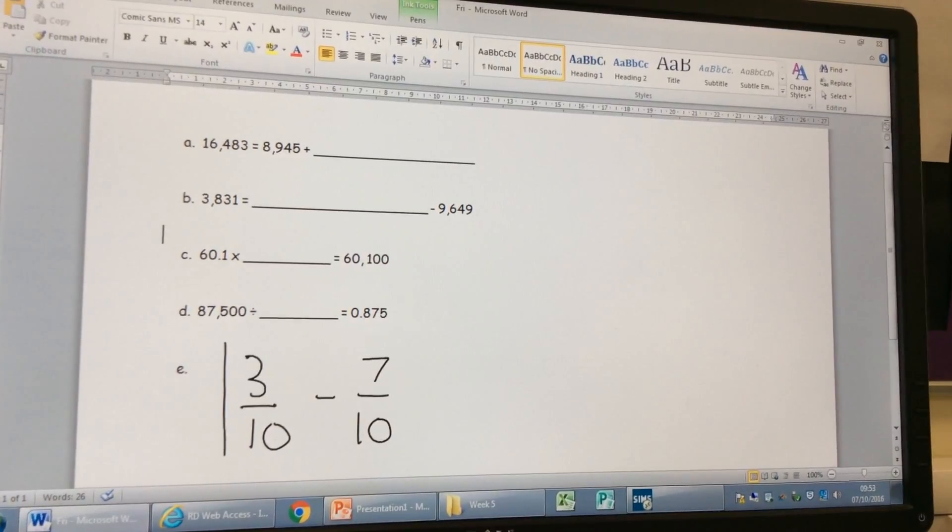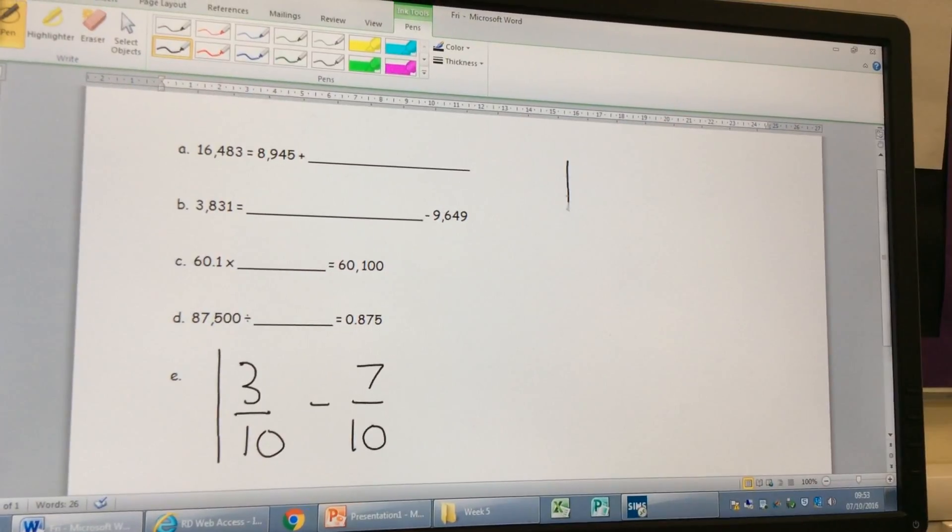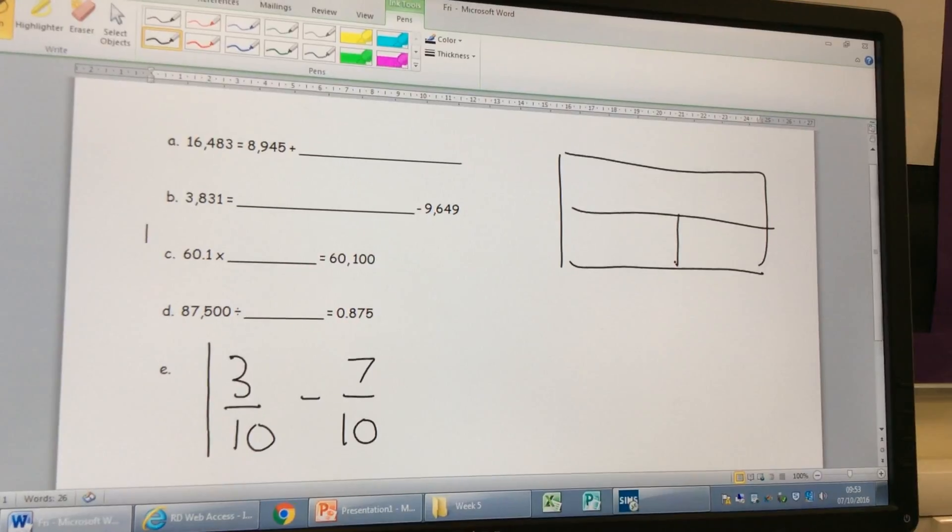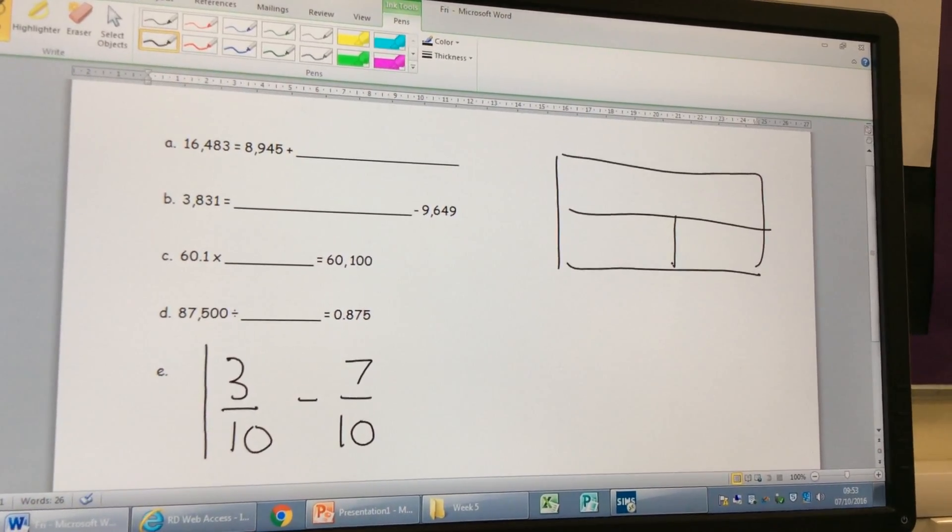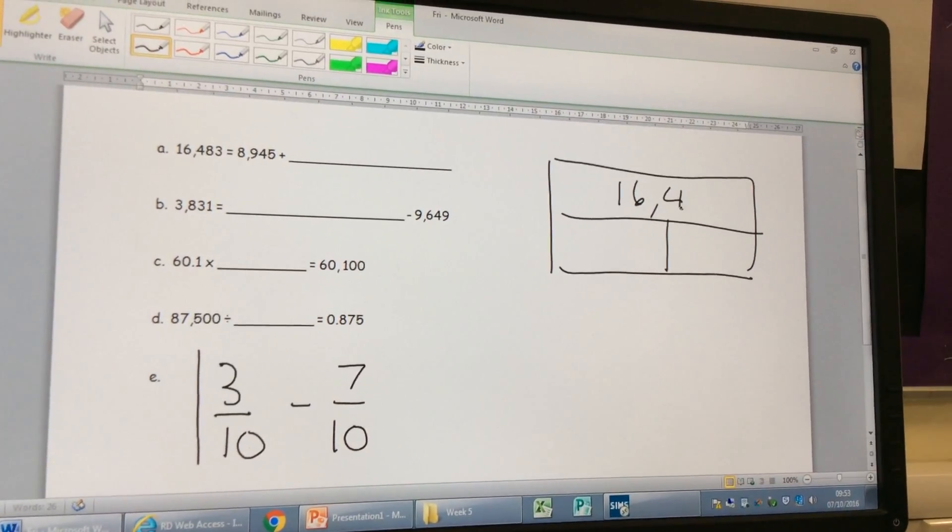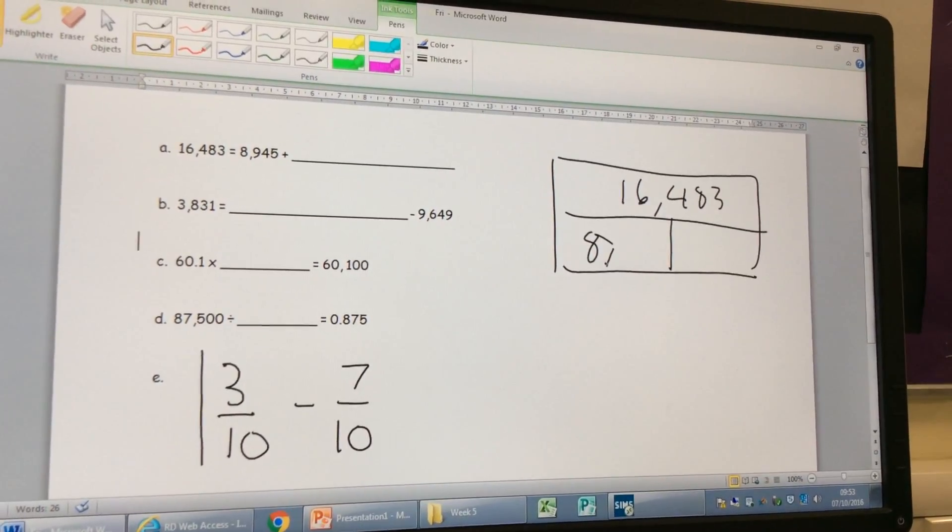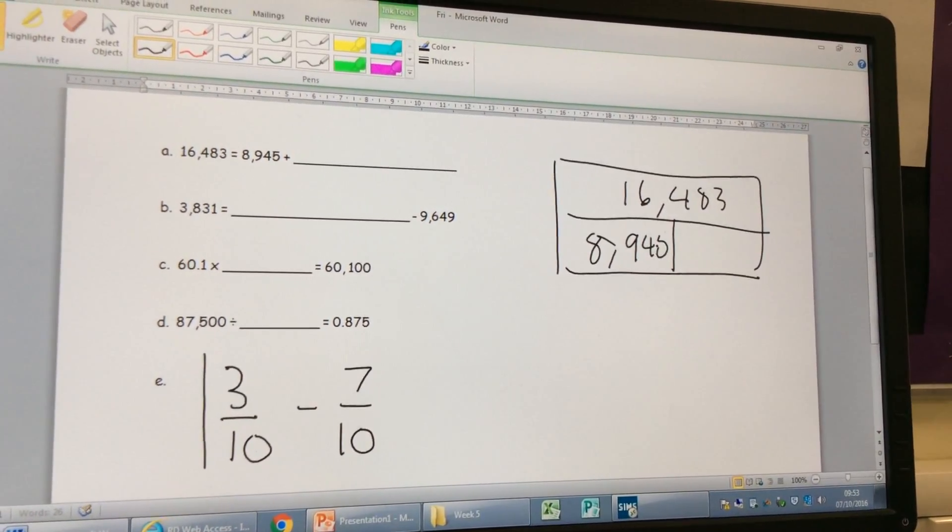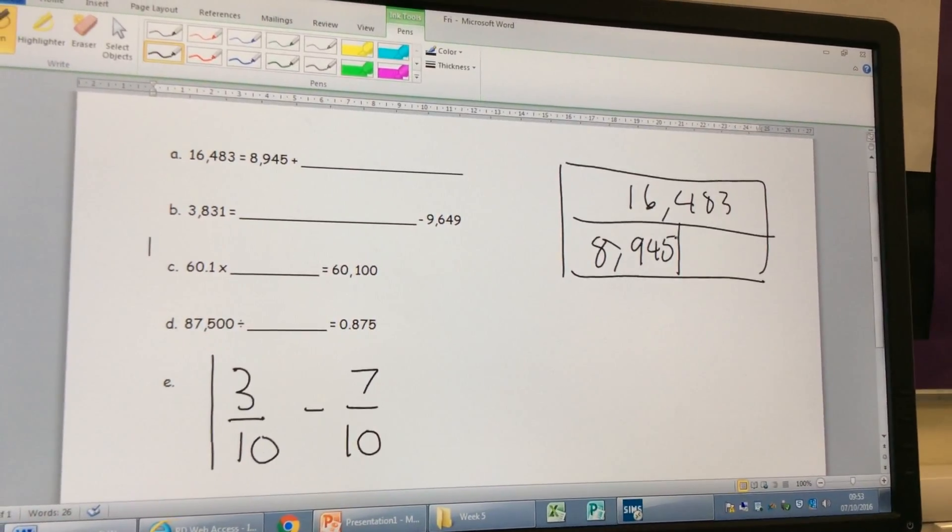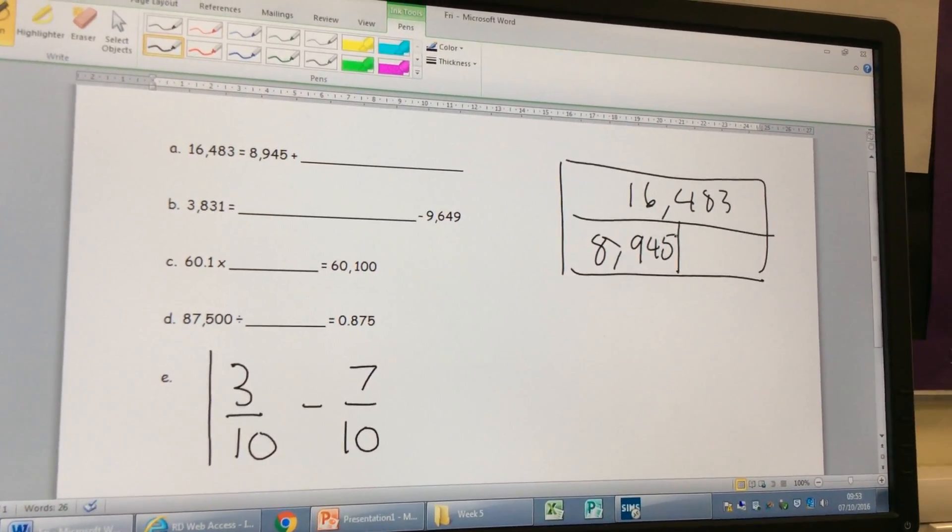Excellent, yes, because when we do an addition the whole is always going to be the answer. So let me just draw a quick bar model to show you what Ryan's just said there. Because we know that in addition calculation two parts are going to make a whole, we put our 16,483 there, our 8,945 there. And we know, looking at our bar model, what operation are we going to have to do to work that out? Abby? Takeaway. We're going to have to do a takeaway to find a part. Well done.